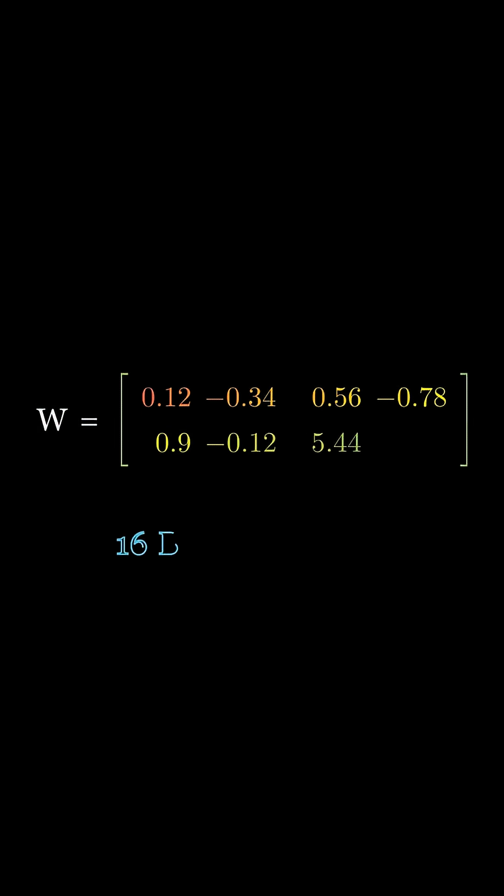Let's understand this with an example. Suppose we have a set of weights like this. Each of these is a 16-bit float and we want to quantize them to 8-bit.